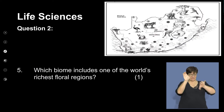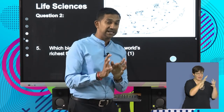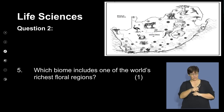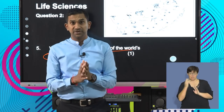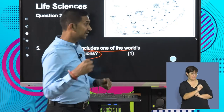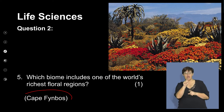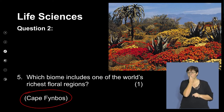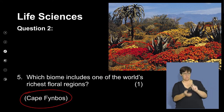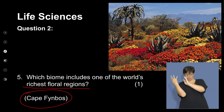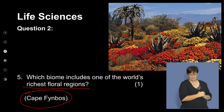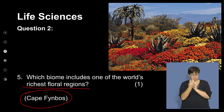Our biomes are unique and characterized by these plants and animals. Knowing that will help us link it to an answer in a question. Which biome includes one of the world's richest floral kingdoms? We often refer to the Cape Fynbos as a unique hotspot because of the types of plants found there that are unique — it is a massive, beautiful arrangement of various endemic plant species found naturally in this area, a rich hotspot of the floral kingdom around the world with many endemic species exclusive to this area.